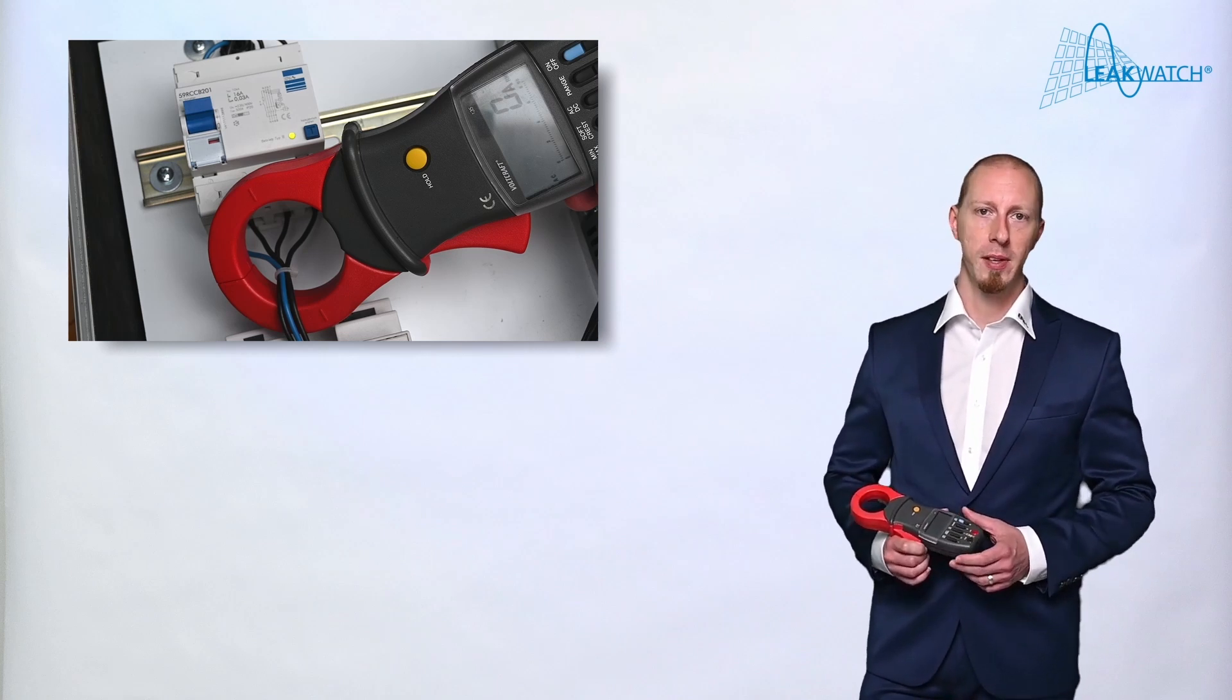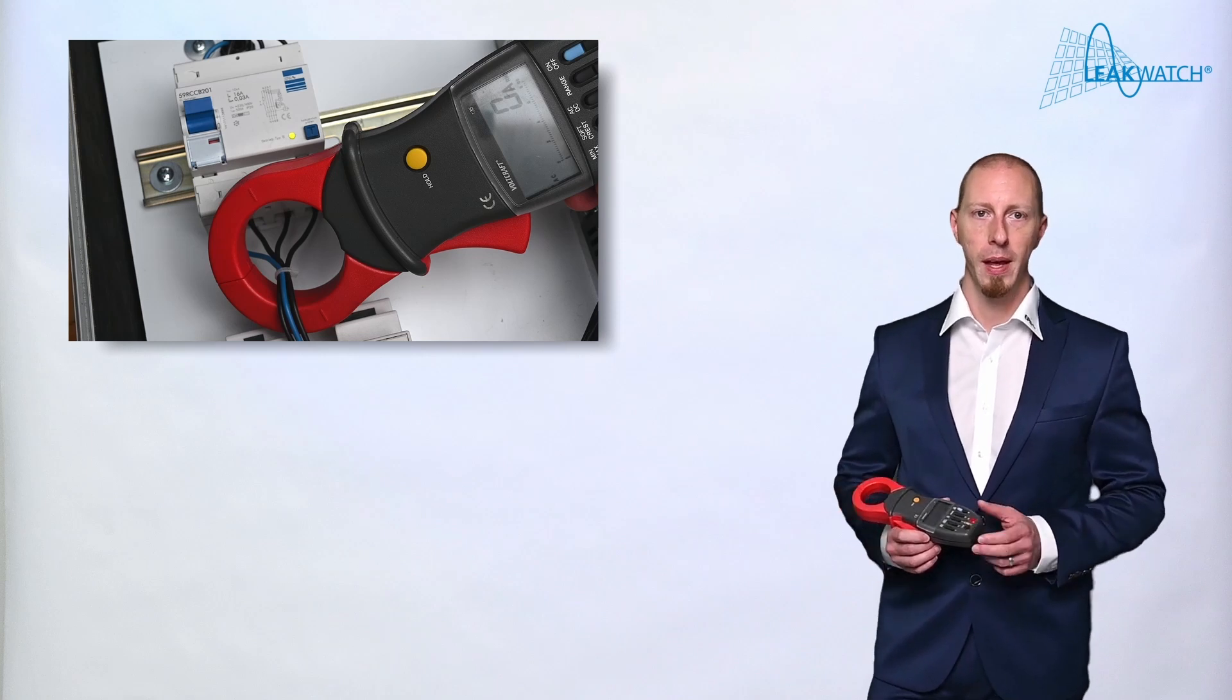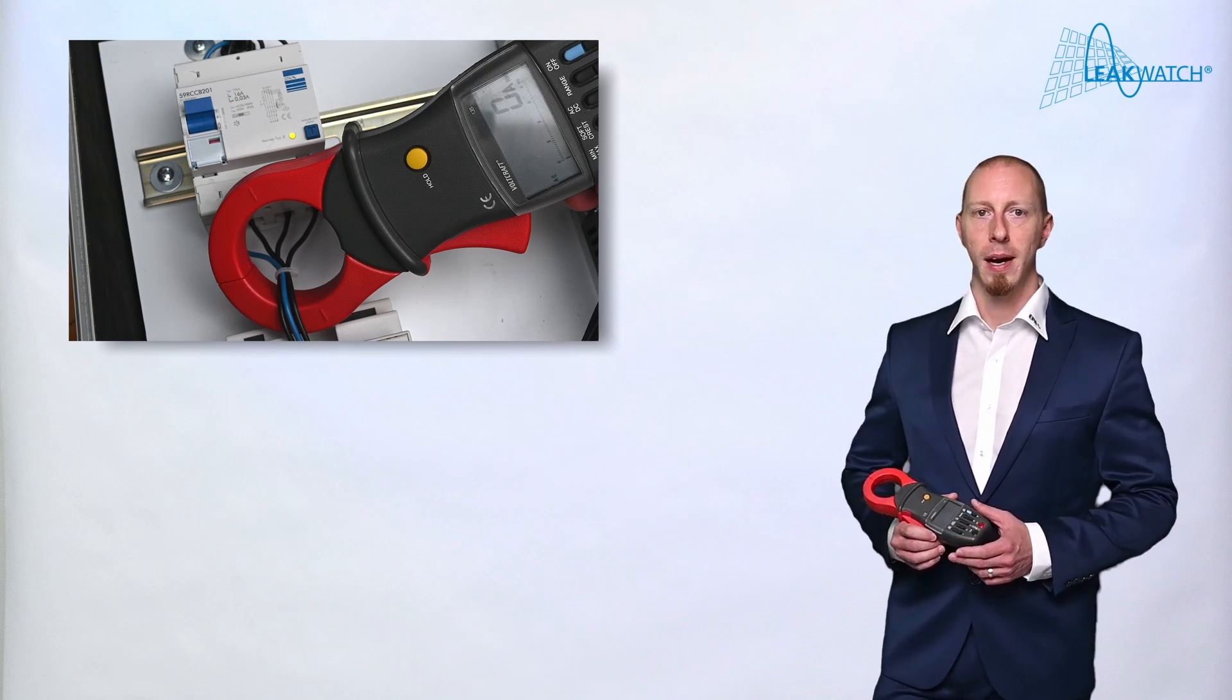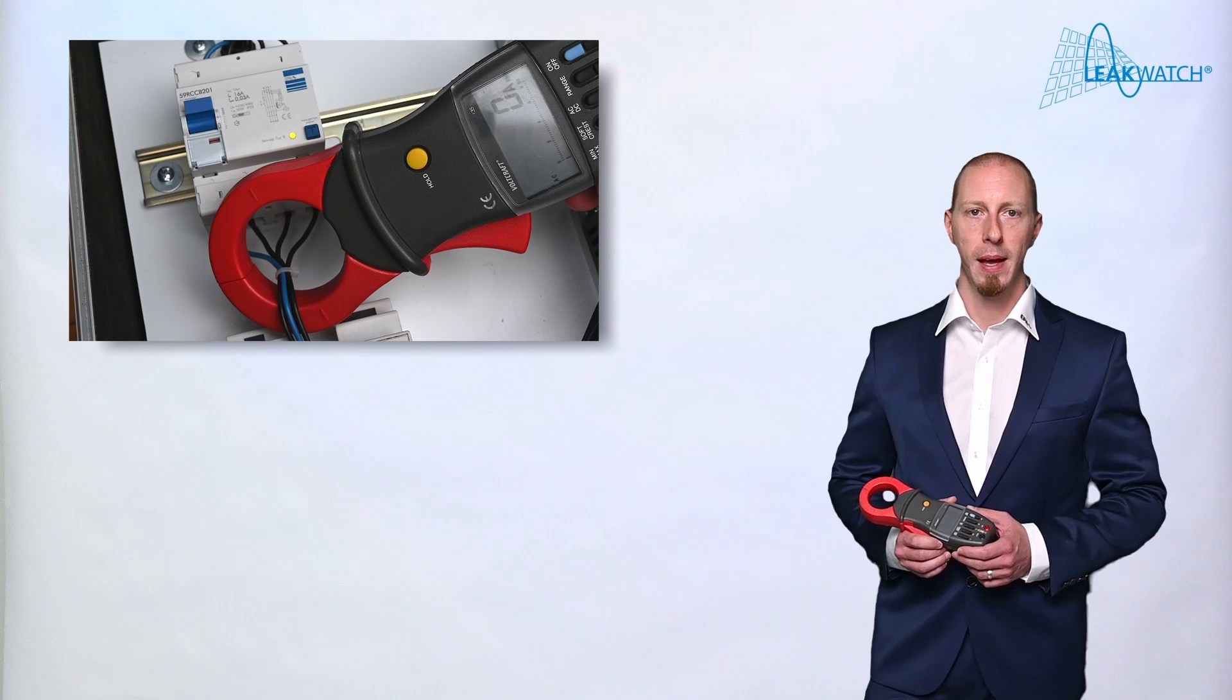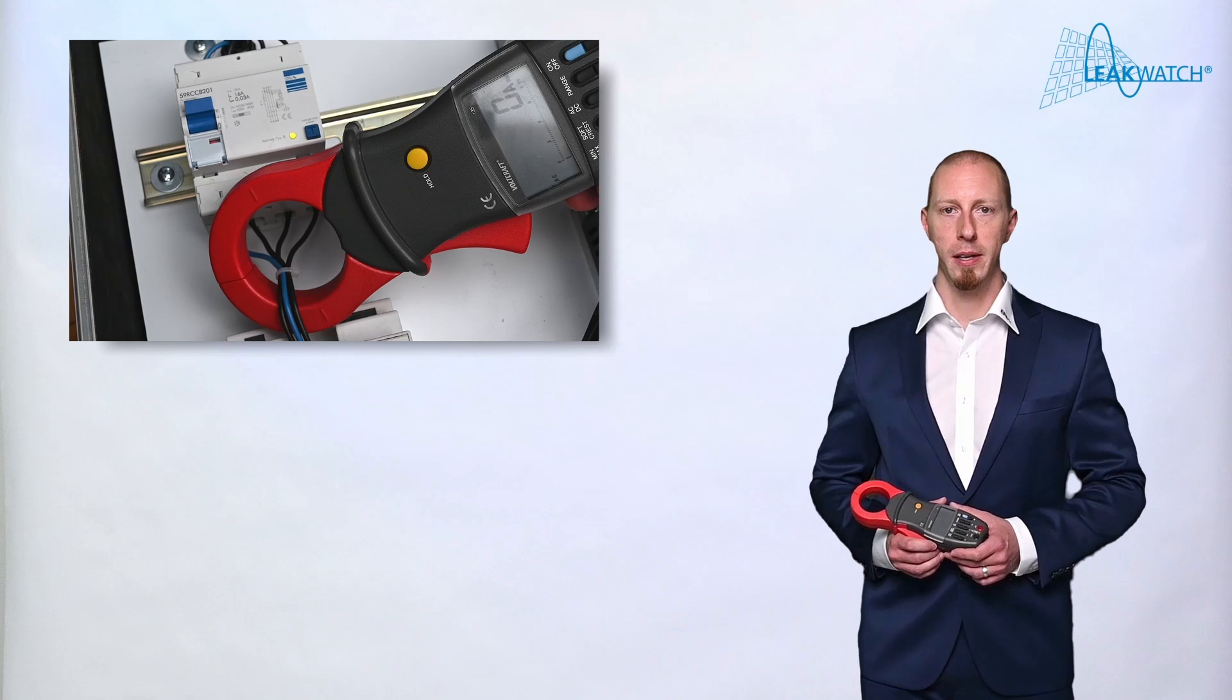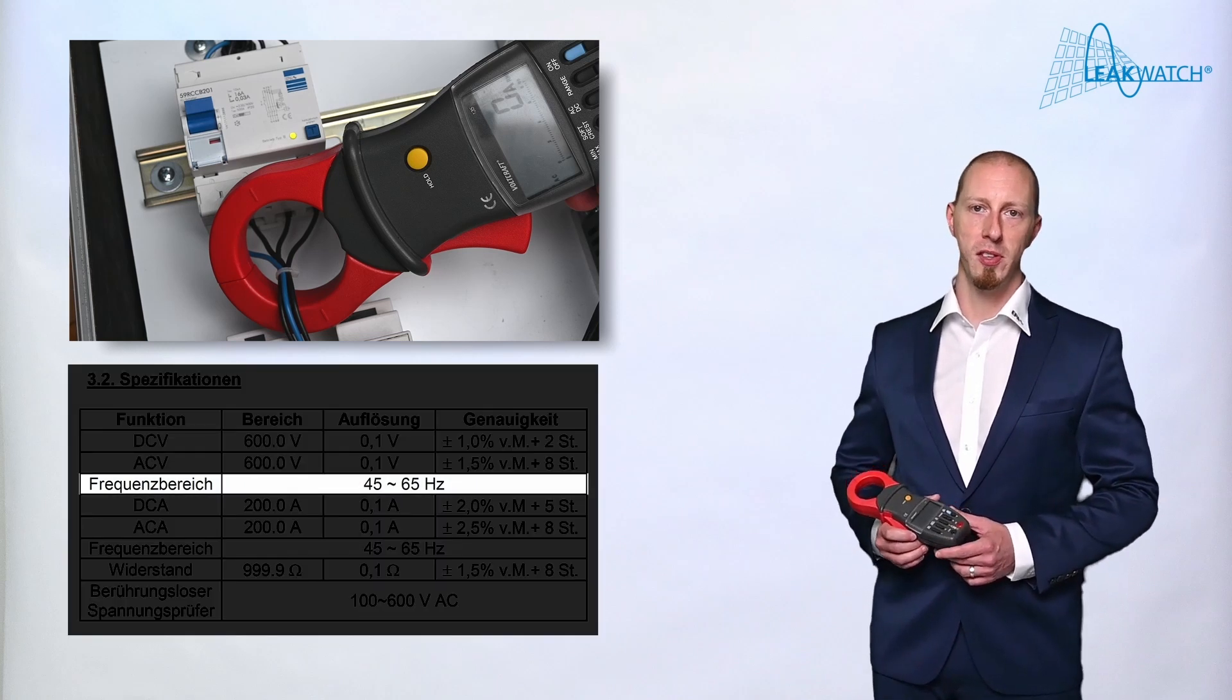However, the choice of the measuring instrument is of the utmost importance. Let's take a normal current clamp as an example. Regardless of its measuring range, the current clamp also has a limit to the frequencies that can be measured. Unfortunately, the measuring range is not always marked on the device. However, a look at the instruction manual shows that our current clamp can only measure up to 65 Hz.